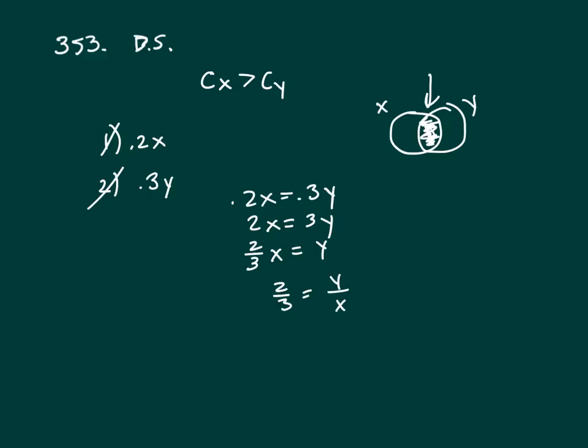I've set up a ratio where this 2 corresponds to Y, and this 3 corresponds to X. So 3 is greater than 2. Therefore, Club X is going to have more than Club Y. So your answer is C.